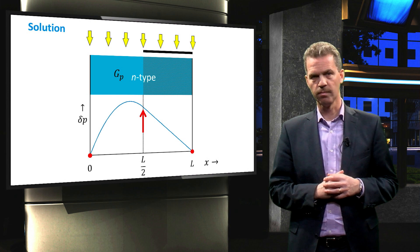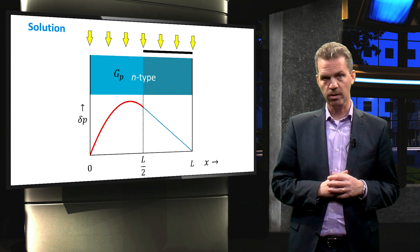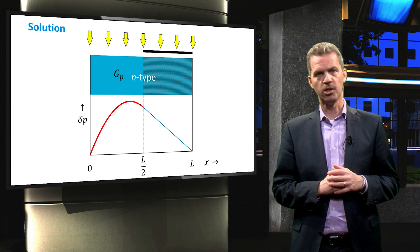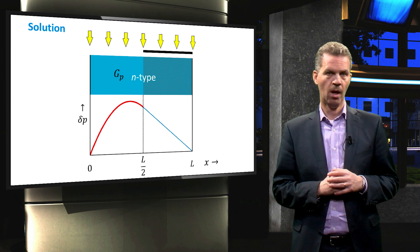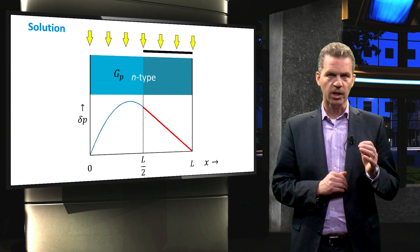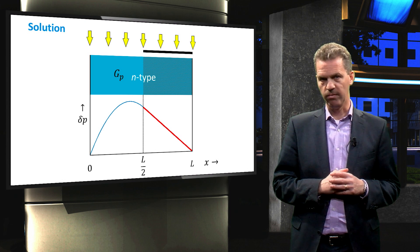The carrier concentration peaks in the illuminated part, which is as expected, since this part is where the charge is being generated. It also shows a parabolic behavior. In the shaded part, only diffusion is present, resulting in a linear behavior.